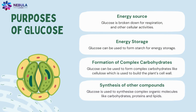Glucose serves multiple purposes: it is broken down for respiration and other cellular activities; it can be used to form starch for energy storage; it can be used to form complex carbohydrates like cellulose, which is used to build the plant's cell walls; and it is used to synthesize complex organic molecules like carbohydrates, proteins, and lipids.